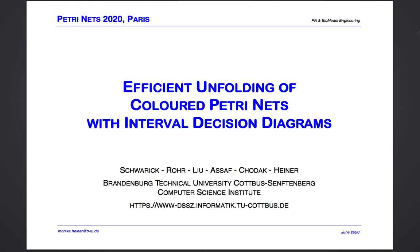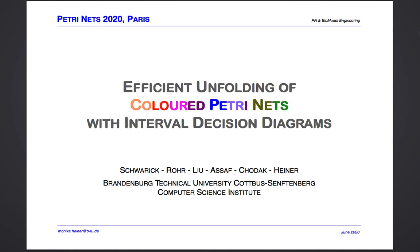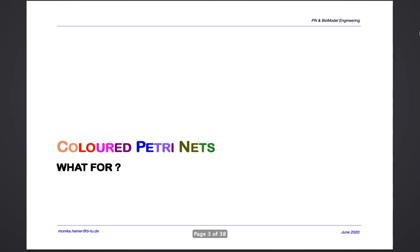Hello everybody. This paper is about colored Petri nets, which often need to be unfolded for exploring the model behavior. This brings us to the question: why do we use them in the first place when they need to be unfolded anyway?